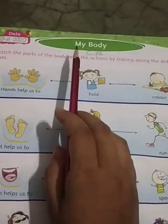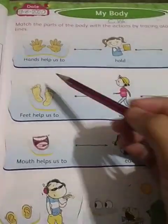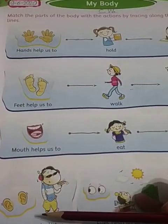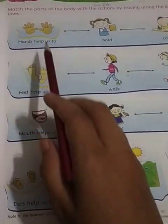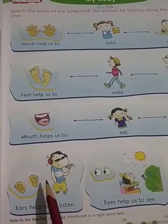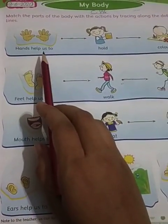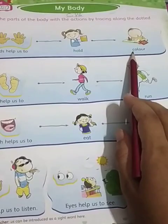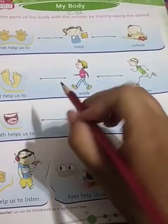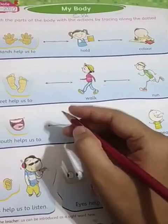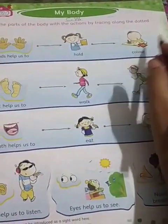Students, this is the topic 'My Body.' Here we have the parts of our body, and here we have the works that can be done with these body parts. For example, hands are useful to hold things and to color. What is the use of hands? We can hold things — like using a pencil — do writing work, coloring, and also many other things.